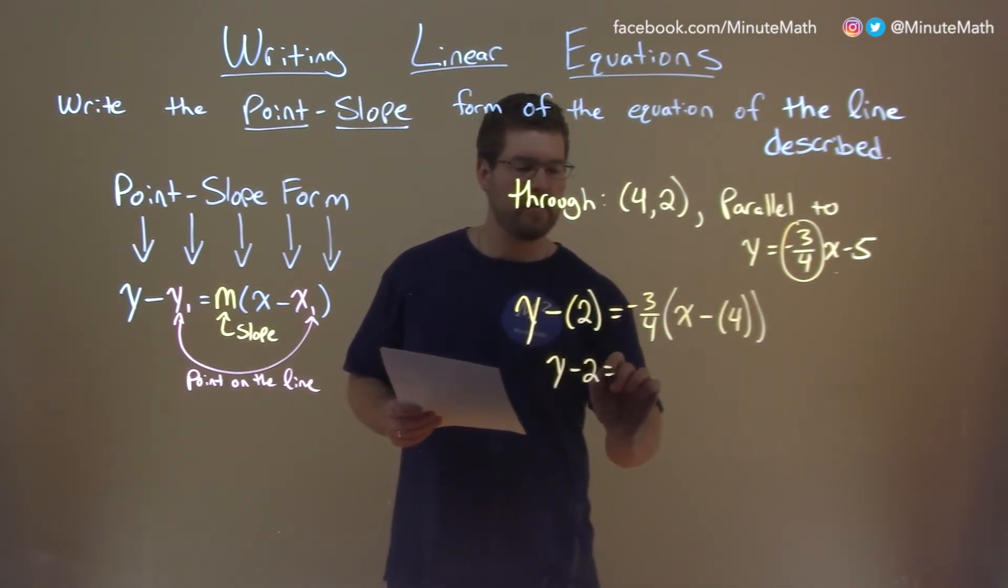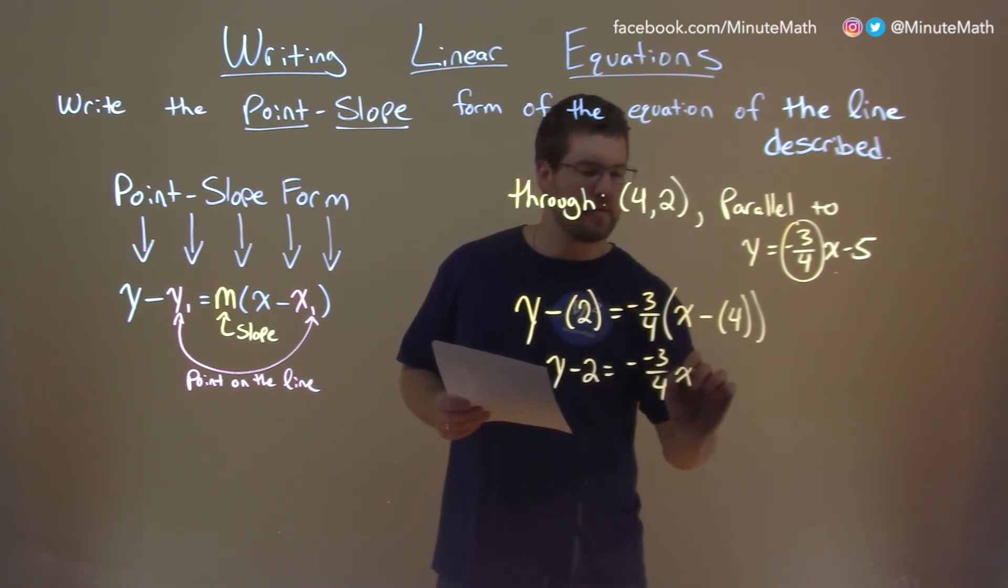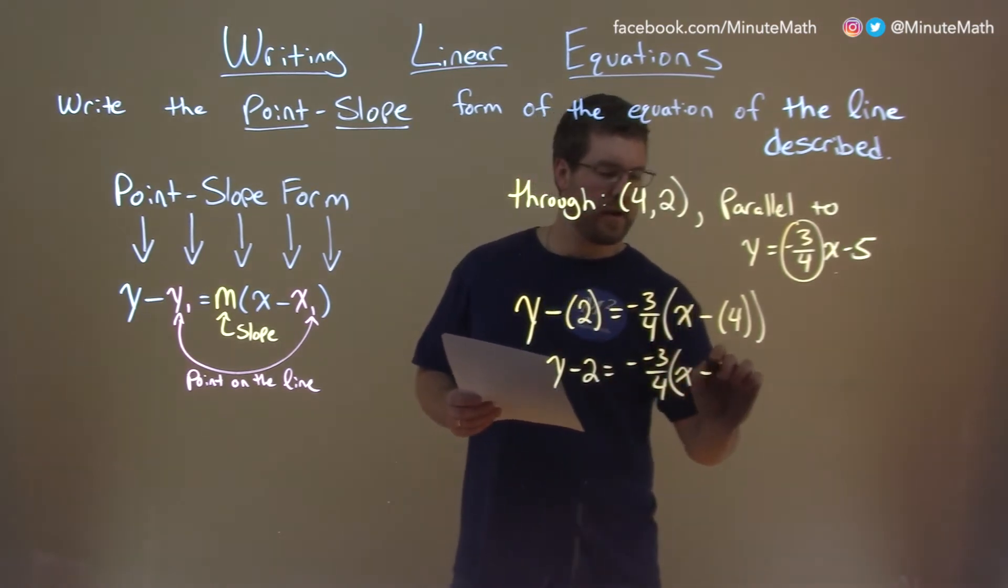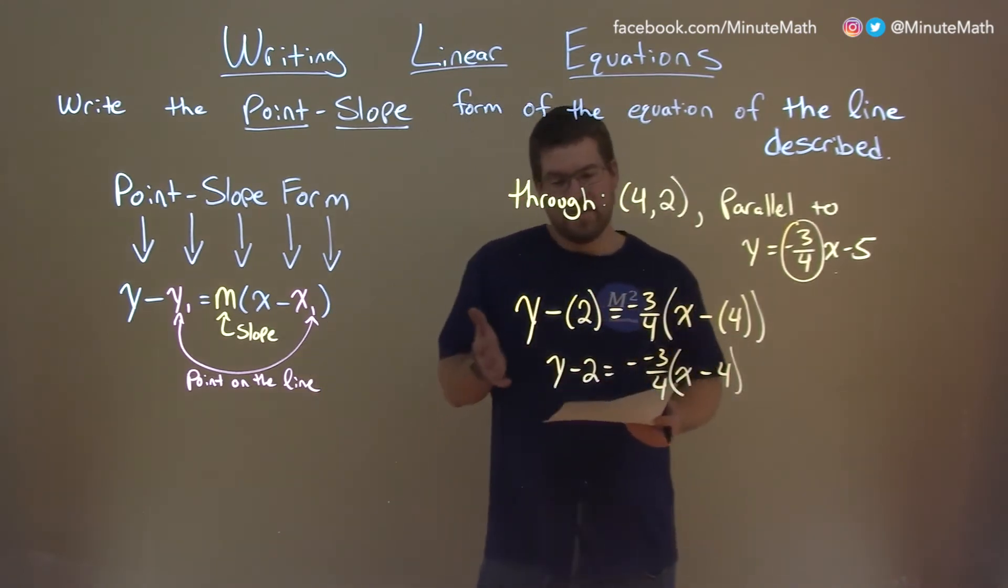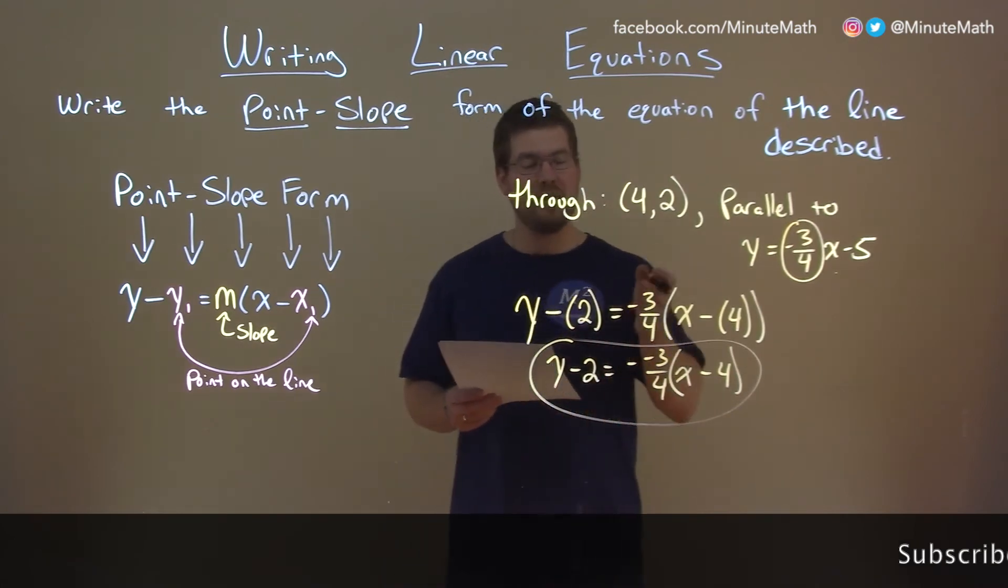We can rewrite it without the parentheses if you want or some of them negative three-fourths x like this minus 4 but that's it. This is actually a fairly easy way to write point slope form given that information.